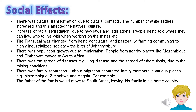Hence the birth of the city of Johannesburg. There was population growth due to immigration — people from nearby places like Mozambique and Zimbabwe moved to South Africa. There was the spread of diseases such as lung disease and tuberculosis due to the mining conditions, which would have led to a lot of loss of life. There was also family separation. Labour migration separated families in various places — for example, Mozambique, Zimbabwe, and Angola. The father of the family would move to South Africa, leaving his family in his home country.